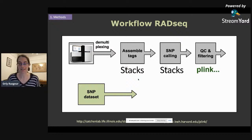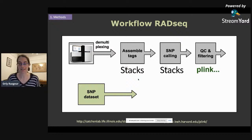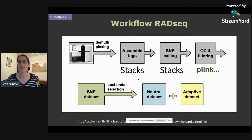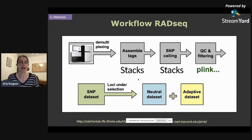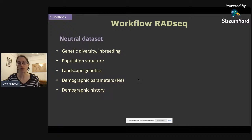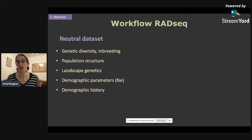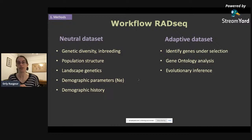We end up with our SNP dataset. In the first stage we identify loci that are under selection in order to divide the dataset into two: a neutral dataset containing only neutral loci, and an adaptive dataset containing SNPs identified as being under selection. We use the neutral dataset to look at genetic diversity, inbreeding, population structure, landscape genetics, and demographic parameters like effective population size and demographic history. We use the adaptive dataset to identify genes under selection, carry out gene ontology analysis to identify the pathways involved, and make evolutionary inferences.